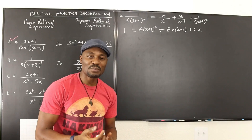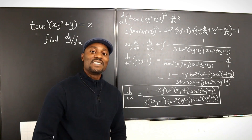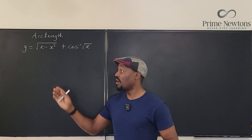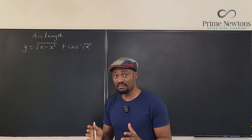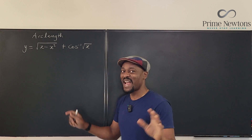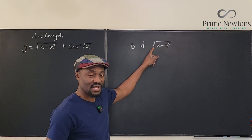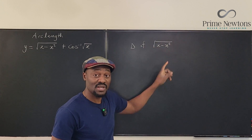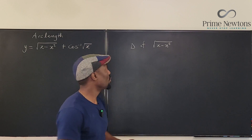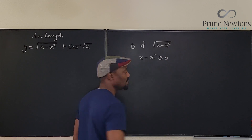So the first thing we're going to do is find the domains of each of these functions and then compare them. To save space, I'm going to do that as side work. We're going to say: how do you get the domain of this? You can see that this is a square root function, and whatever is inside the square root has to be at least zero — it has to be a positive number. So we know that x minus x² must be greater than or equal to zero.